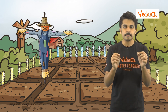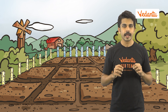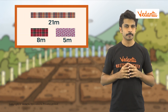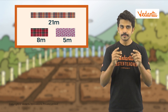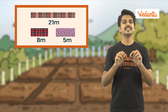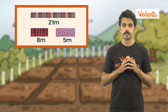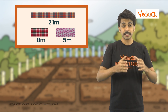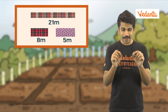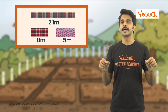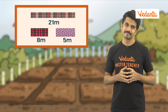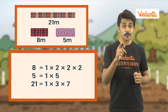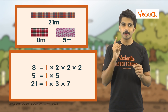Finally, we need to make some scarecrows for the farm. I have 3 pieces of fabric of 8, 5, and 21 meters respectively. These have to be cut into the same length of pieces of maximum size. Find the size of the cloth in which they should be cut. The maximum length of each piece would be the HCF of the given lengths. 8, 5, and 21 are co-prime numbers, so the HCF will be 1.